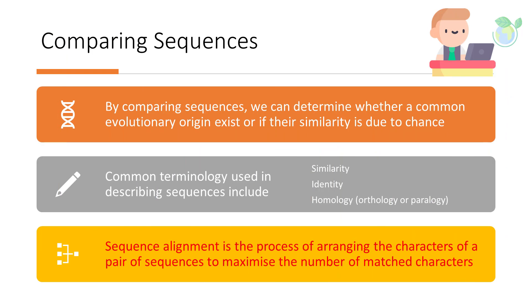By comparing sequences, we can determine whether a common evolutionary origin exists or if their similarity is due to chance. Common terminology used in describing sequences includes similarity, identity, and homology, which we will discuss later.